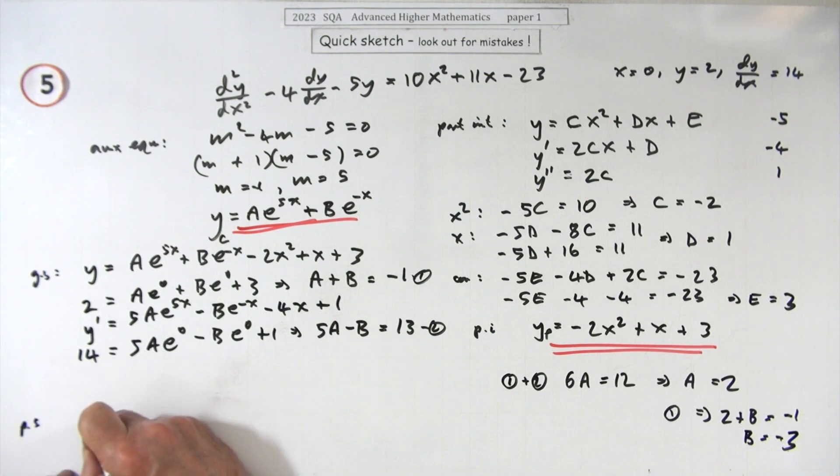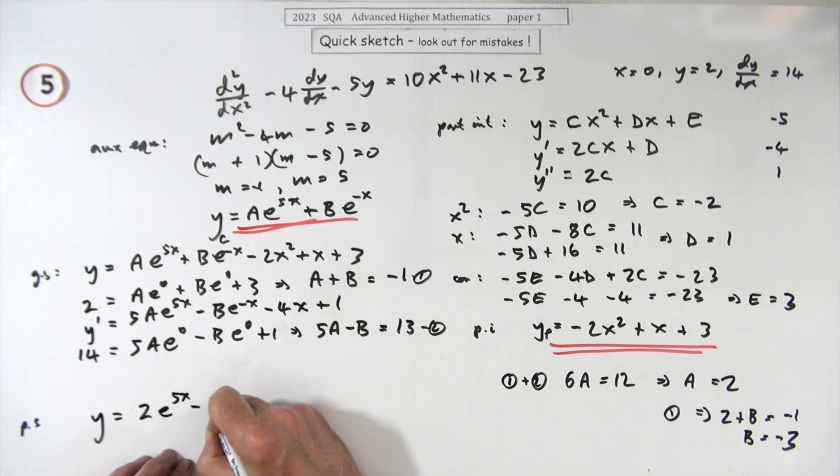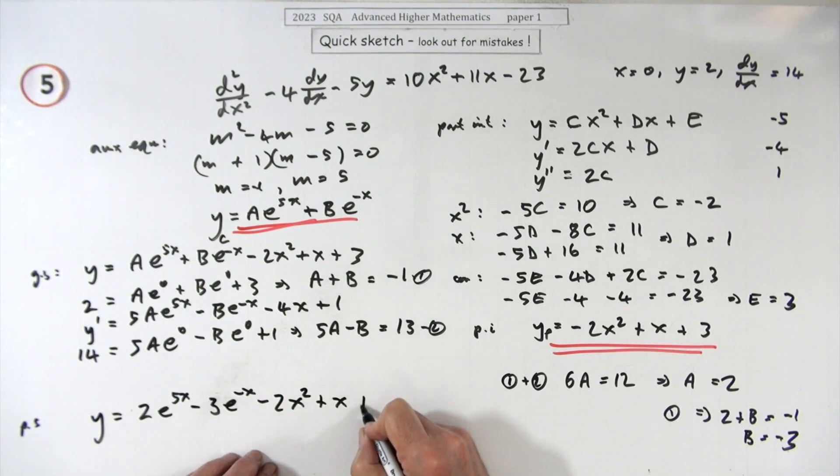Now you just put it all together. So here you are for the particular solution, y is equal to, a is 2, 2 e to the 5x minus 3, minus 3 e to the negative x, and we've done that part already, minus 2x squared plus x plus 3. Got it all in one board, there it is.